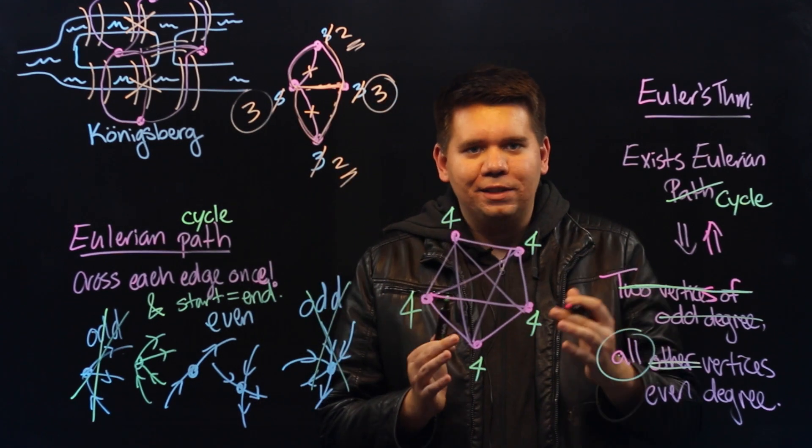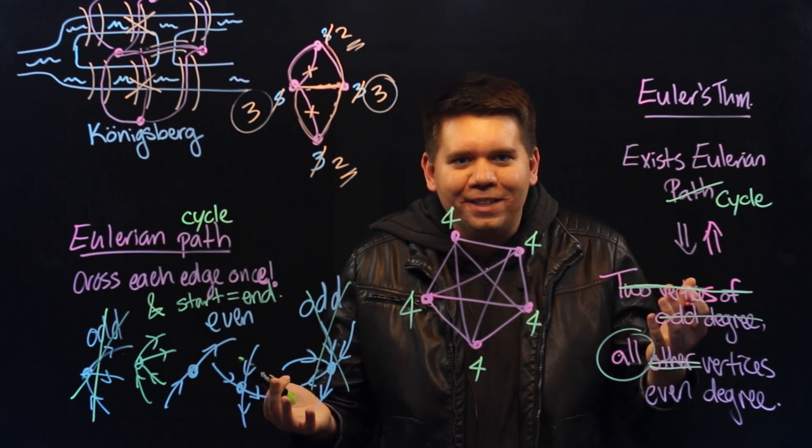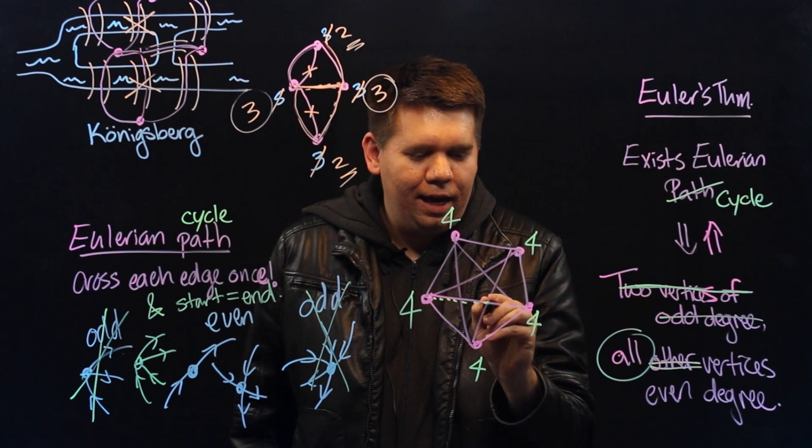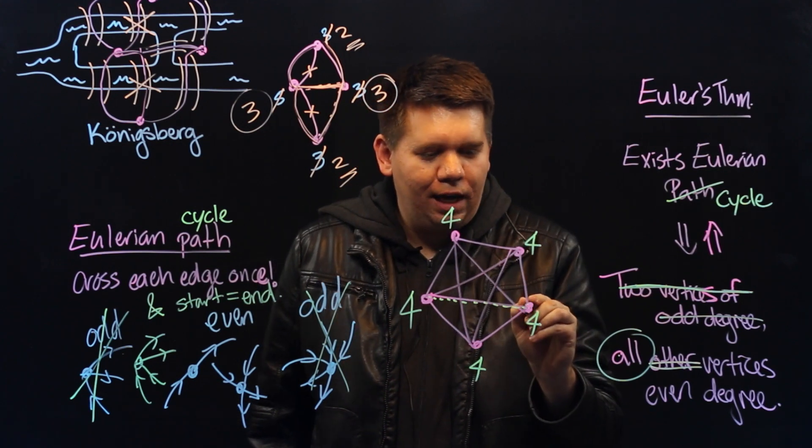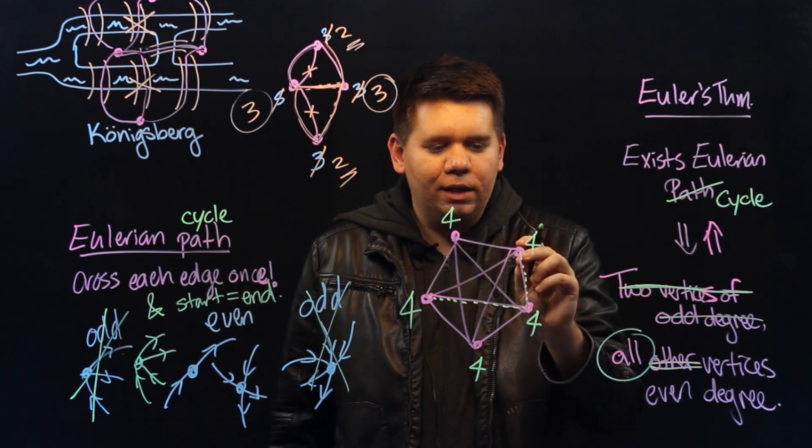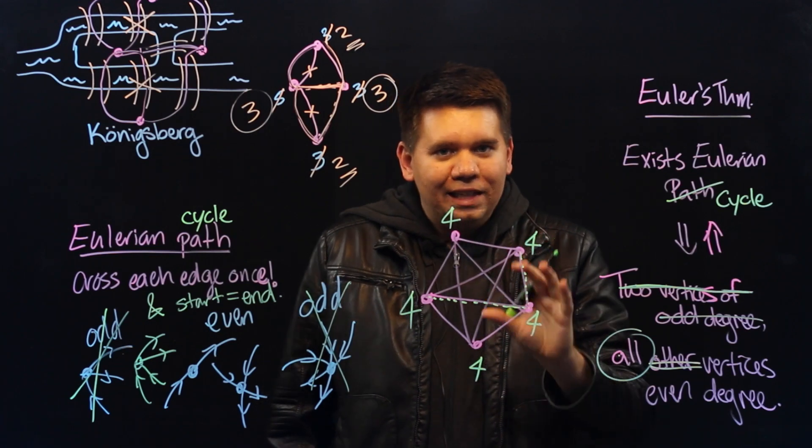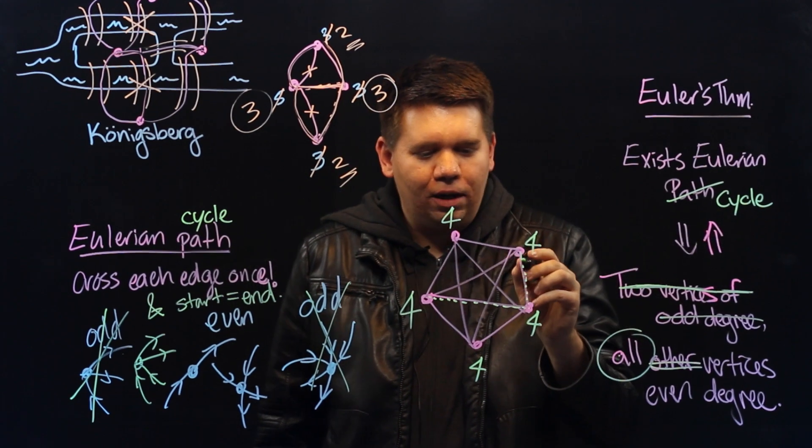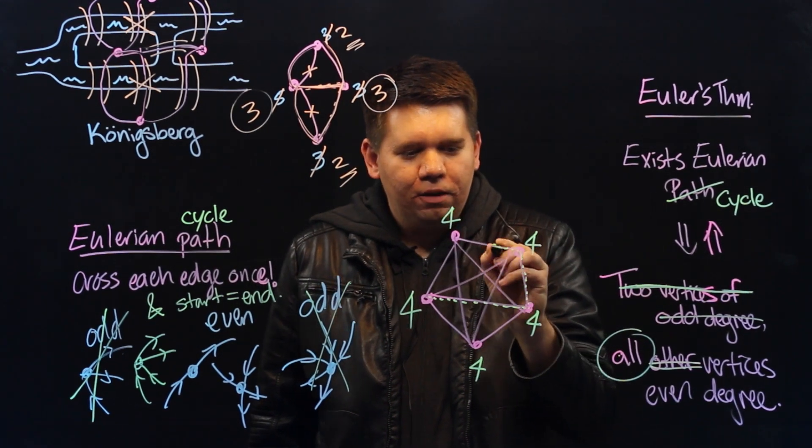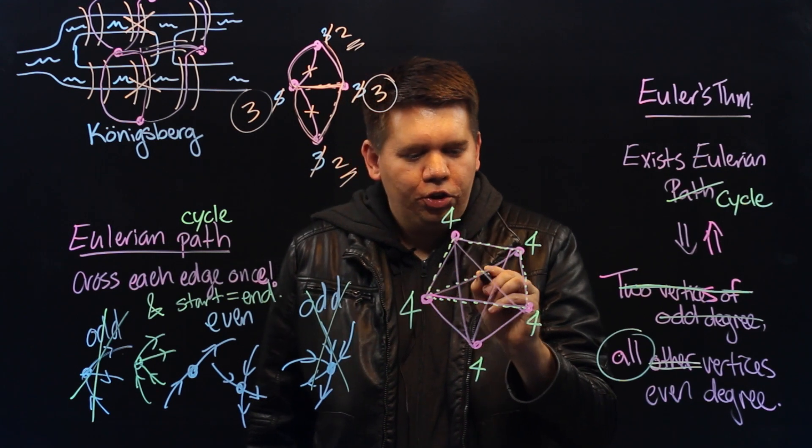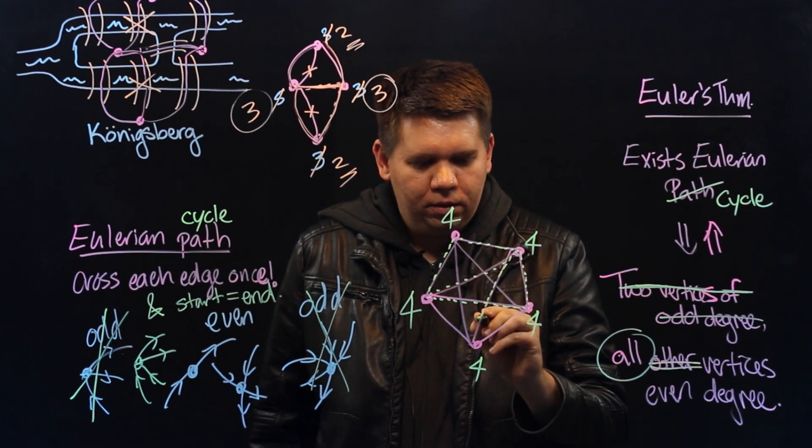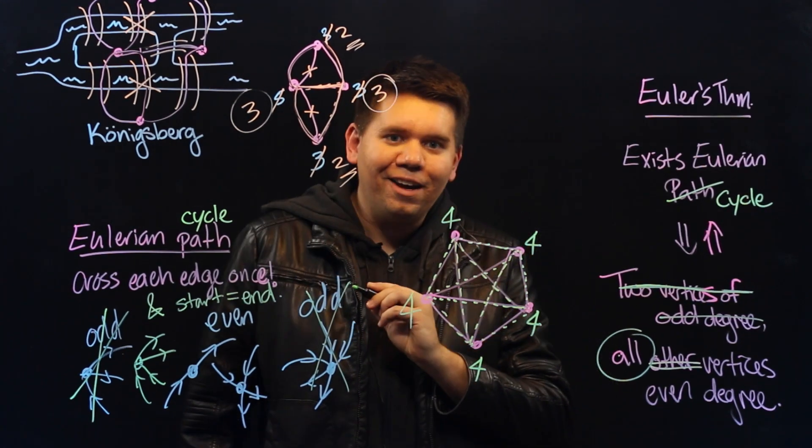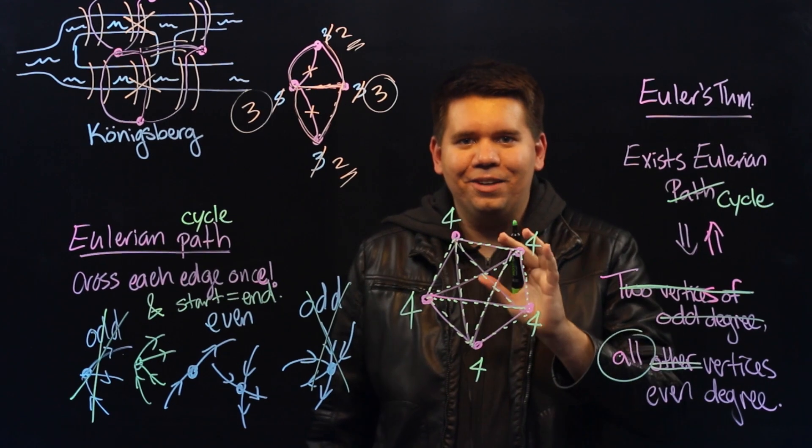One of the ways is called Fleury's algorithm. It simply says do the obvious thing on each step. Begin at some vertex, travel along an edge, keep traveling along edges, thinking that as you're traveling along it, you're erasing those edges. And do your best not to disconnect the graph. You don't want to isolate yourself in some point by itself. But if you do that, Fleury says, then you'll end up creating a cycle that hits every edge exactly once.